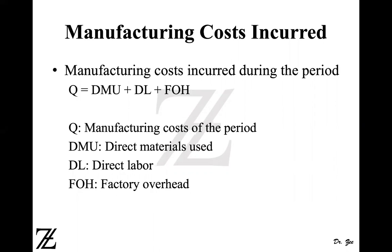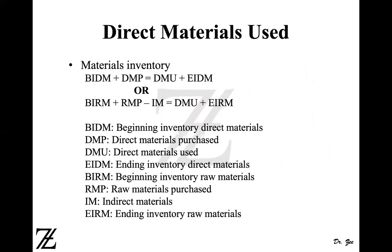How much direct labor you have incurred is easy to find out: labor rate times the number of hours spent times the number of workers you have. The factory overhead can be calculated using the predetermined overhead rate. For direct material used, however, you need to separate out the indirect material and use the algebraic equation or prepare the direct material used schedule.